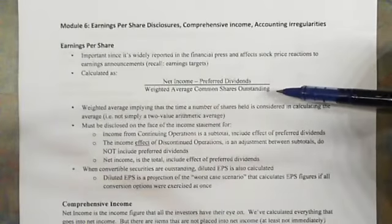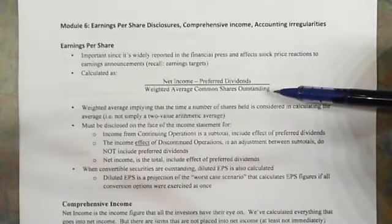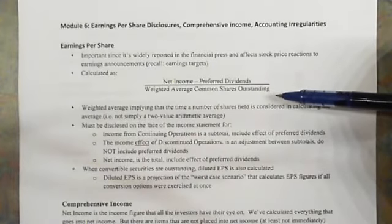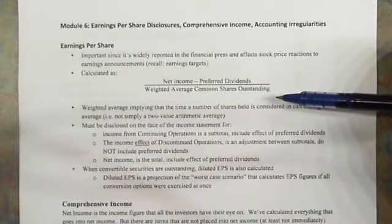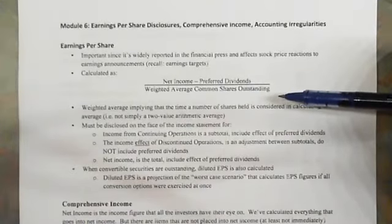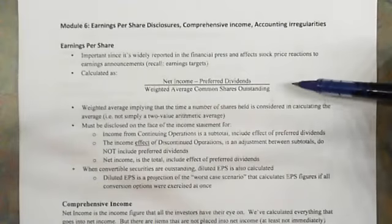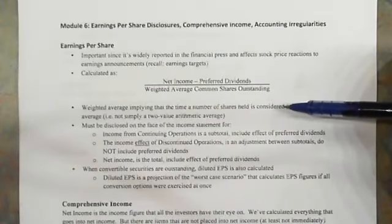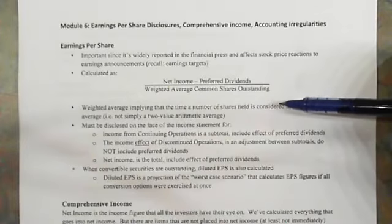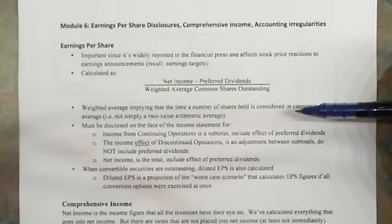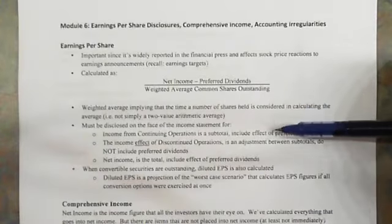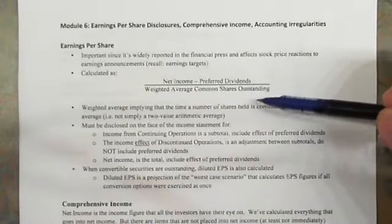Weighted average is just an adjusted average with the consideration that, for example, if you had 80,000 shares at the beginning of the year and 100,000 at the end, and you offered 20,000 more shares in the middle of the year, the true average wouldn't simply be 90,000. You might not have issued those shares until December, in which case the average would be more weighted toward 80,000 than 100,000, because there's only one month in which you have 100,000 outstanding.